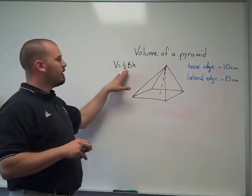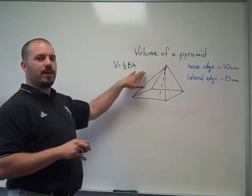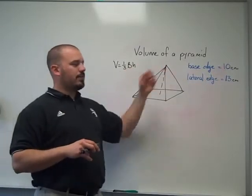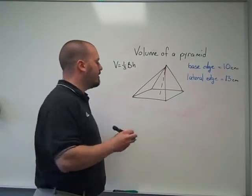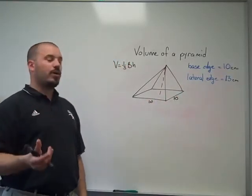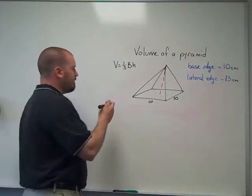Okay, so if the formula is one-third area of the base times the height, I need to find the area of the base and the height. My given information is definitely enough since my base edges are 10 and it's a square, I can find the area of that base fairly easily.